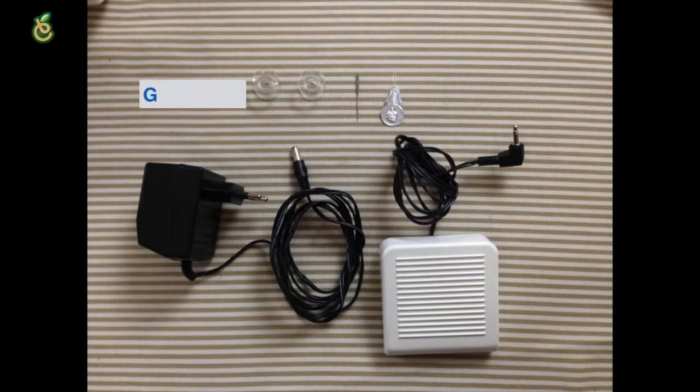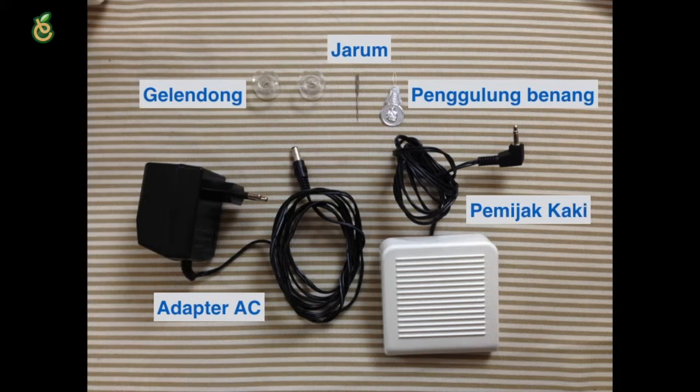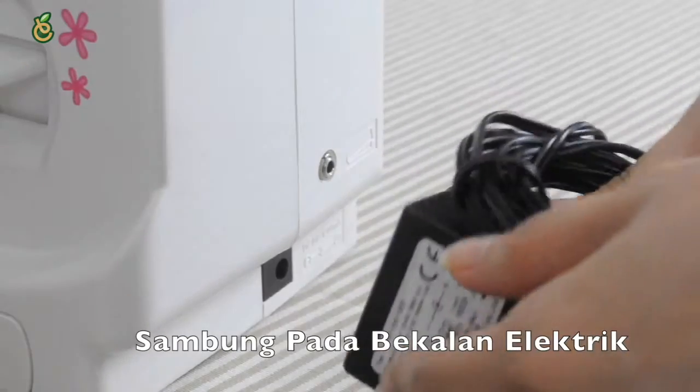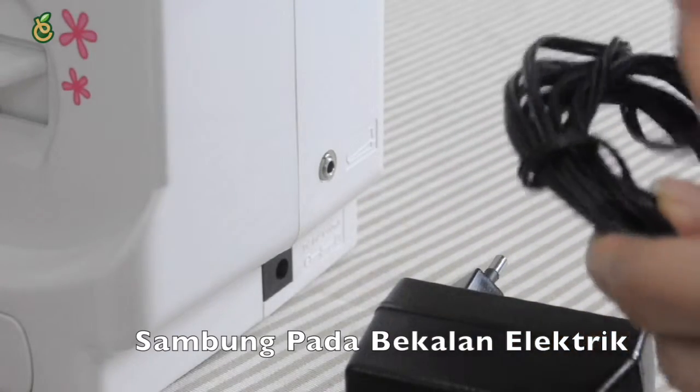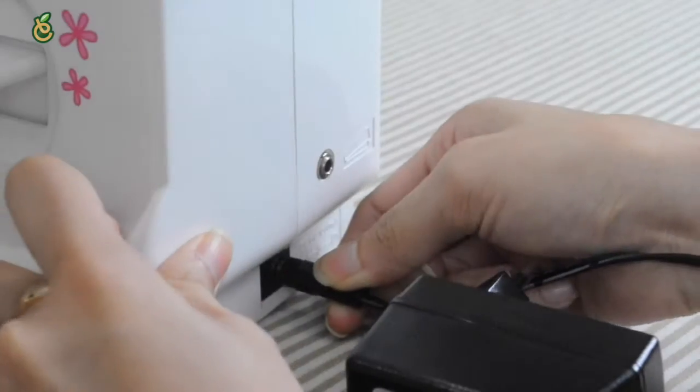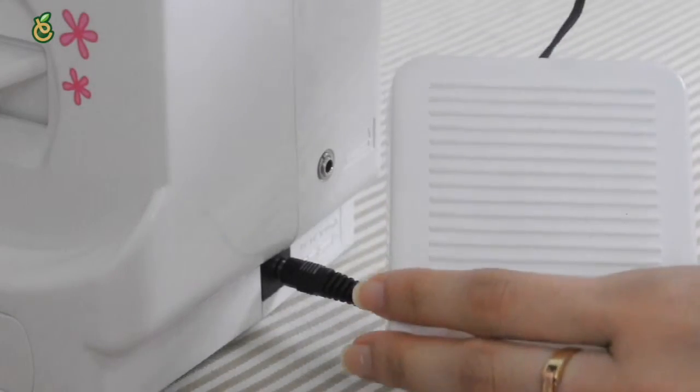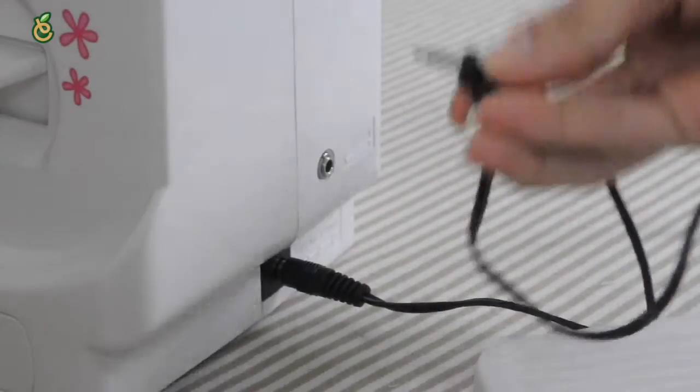We will need a bobbin, a needle, a threader, an AC adapter, and a foot switch. Let's get ready. Insert the AC adapter plug into the AC adapter jack and insert the AC adapter into the power outlet. Insert the foot switch plug into the foot switch jack.